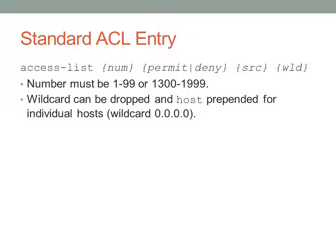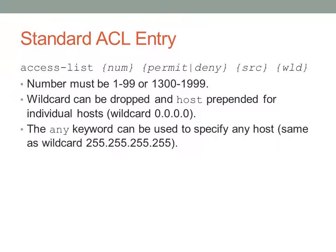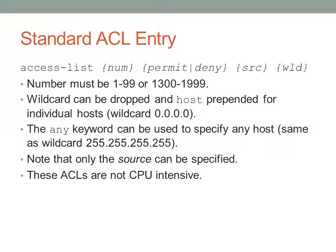The wildcard mask can be dropped and you can prepend the host keyword instead for individual hosts — the equivalent wildcard mask is all zeros, meaning all bits are important. For example, 'access-list 1 permit host 10.1.1.1'. You can also use the any keyword, such as 'access-list 1 deny any', to specify any traffic coming through the access list. Note that only the source is specified in a standard access list entry — you cannot specify the destination. These are not very CPU intensive since they only look at the source address.